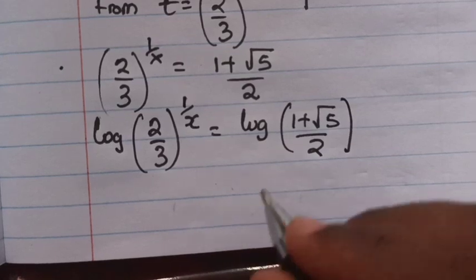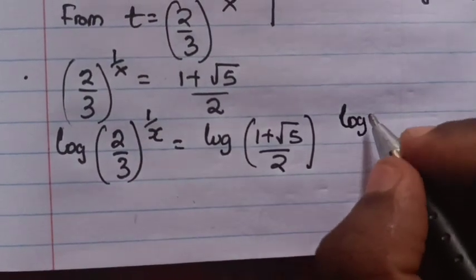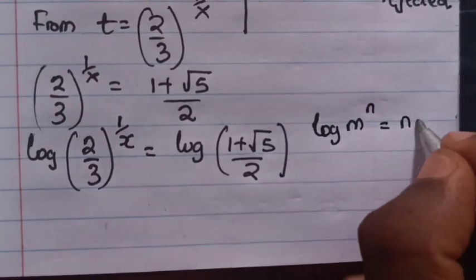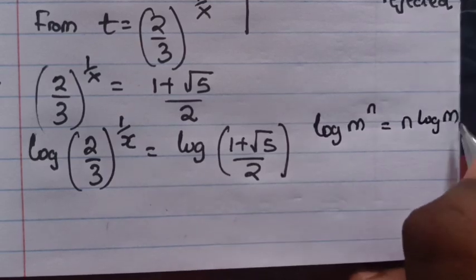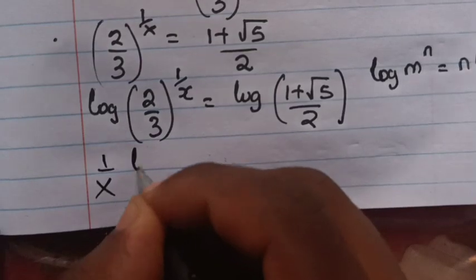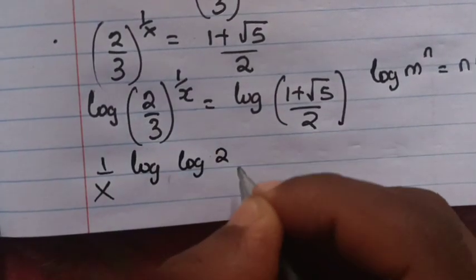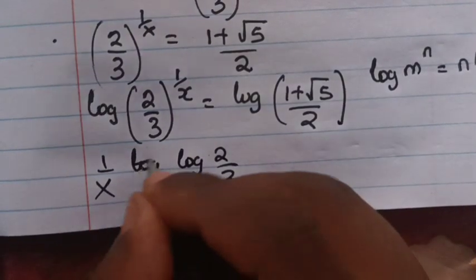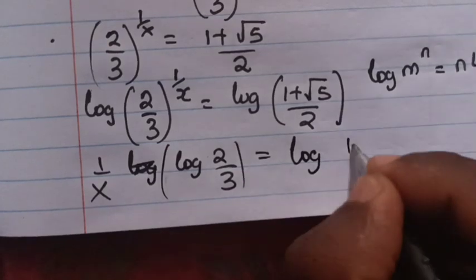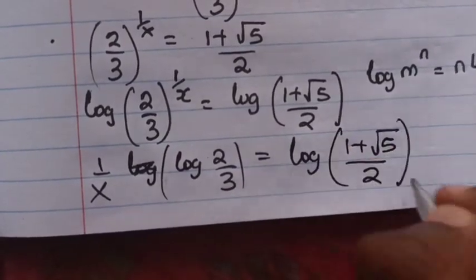From the log rule, log of m to the power n equals n times log of m. So when we apply this rule, it will be (1/x) times log(2/3) equals log of (1 plus square root of 5) over 2.